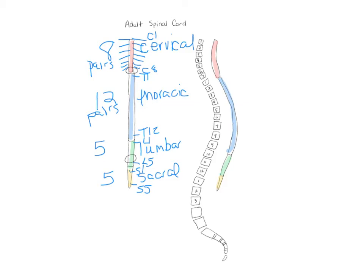There are seven cervical vertebrae but eight cervical spinal nerves because the first spinal nerve exits above the first vertebra, and the second exits between the first and second vertebrae, and so on. The last cervical spinal nerve exits below C7. That's why we end up with eight cervical spinal nerves even though there are only seven cervical vertebrae.